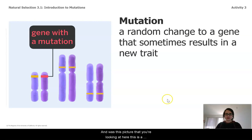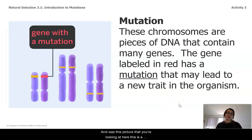And with this picture that you're looking at here, this is a diagram of something called a chromosome, which is basically a big piece of DNA that contains many genes. The gene that's labeled in red is one noting a mutation that may lead to a new trait. Maybe.